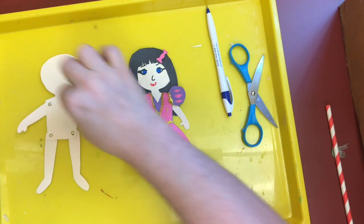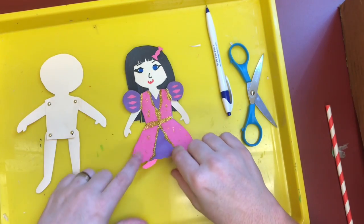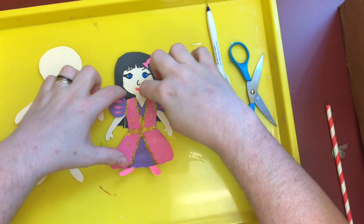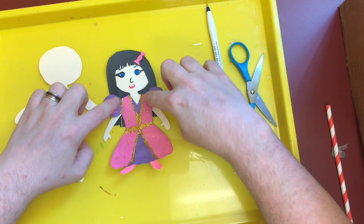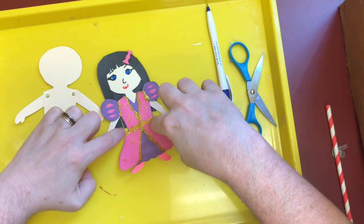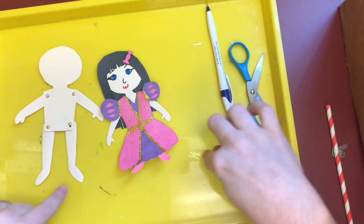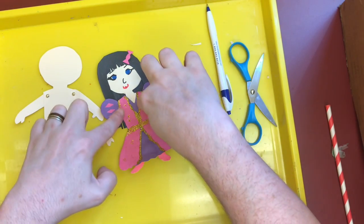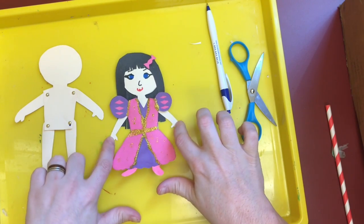What I do to make the clothes for my puppets is I put the puppet onto construction paper and trace the puppet. And then I drew the clothes around them how I wanted them to look and cut out the clothes. So for this one, you can kind of see I traced the puppet's torso and then I drew the skirt coming off and I drew the little puffy sleeves coming off.